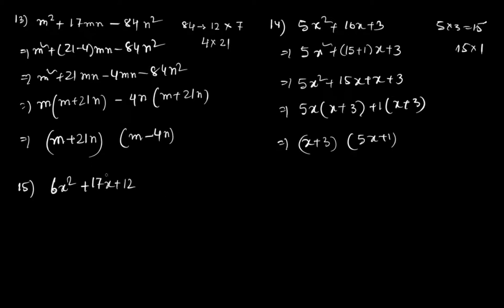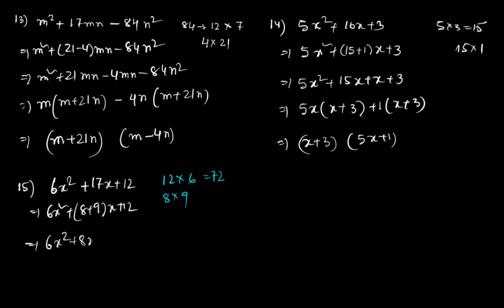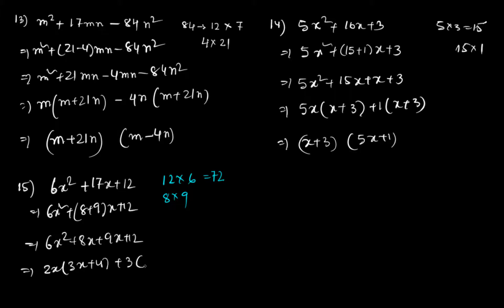For Question 15, the product is 72 and we need factors that sum to 17. So 8 and 9 are the factors: 6x² + 8x + 9x + 12. Taking 2x common gives 2x(3x + 4), and taking 3 common gives 3(3x + 4). So the answer is (3x + 4)(2x + 3).